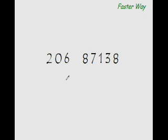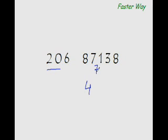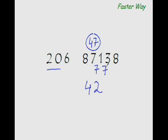Now let's divide 87138 by 206. Break this divisor as 20 and 6, where 20 is your main divisor and 6 is your unused digit. 20 goes into 87 four times — 20 times 4 is 80 — leaving remainder 7. Our new dividend would be 71 minus 6 times 4, that is 24. So 71 minus 24 is 47. 20 goes into 47 twice — 20 times 2 is 40 — so remainder is 7. Our new dividend would be 73 minus 6 times 2, that is 12. So 73 minus 12 is 61.